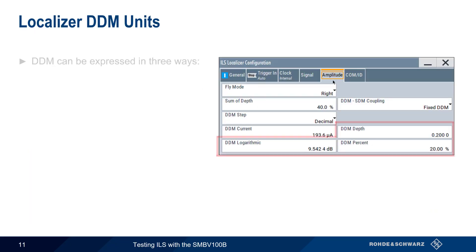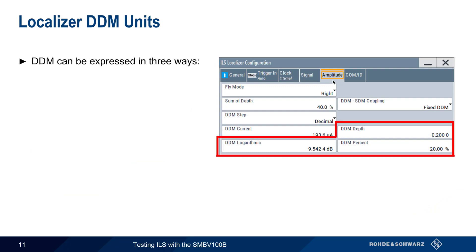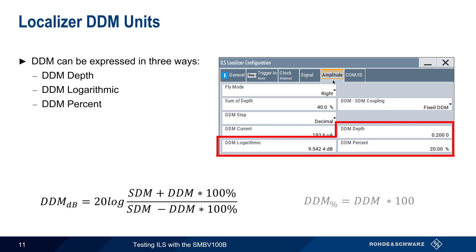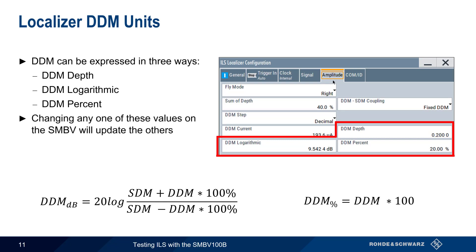Difference in depth of modulation can be expressed in three different ways: DDM depth, which is unitless; DDM logarithmic, which is in units of dB; and DDM percent. The conversion between units is done using simple formulas. On the SMBV, changing any one of these values will update the other values automatically.